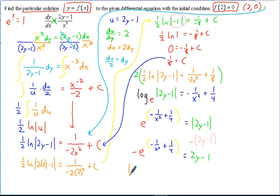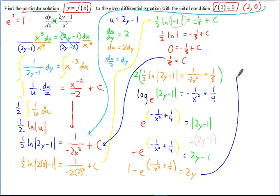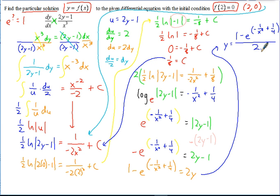Adding 1 to both sides: 1 minus e to the (negative 1 over x squared plus 1/4) equals 2y. Then dividing by 2, our final particular solution is y equals 1 minus e to the (negative 1 over x squared plus 1/4), all divided by 2.